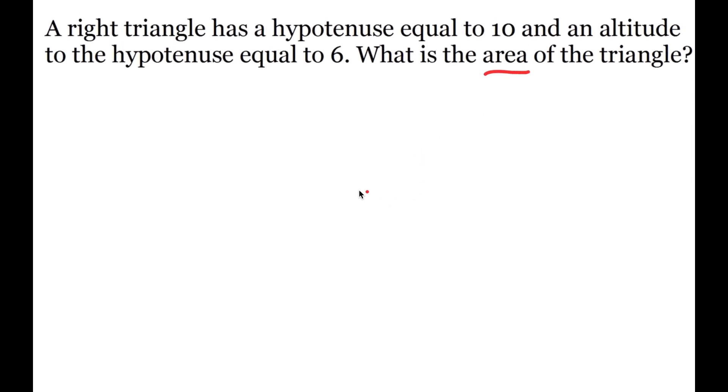We can draw out the triangle. This is the triangle given these measurements. As you see, the hypotenuse is 10 and the altitude that is adjacent is 6. So, how are we going to find the area of the triangle?